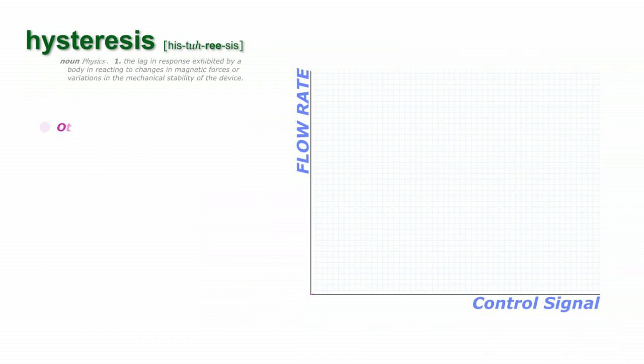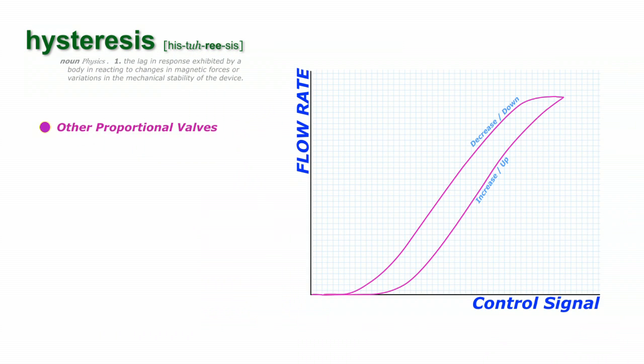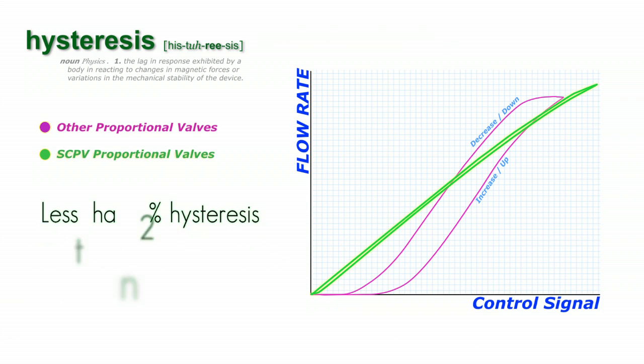Hysteresis can be a programmer's nightmare. Most proportional valves on the market come with mechanical or magnetic hysteresis that can cause different flow rates at the same set points. The SCPV has less than two percent hysteresis. It is essentially a needle valve that is repeatable in its flow whether you are opening or closing the valve to reach the same point.